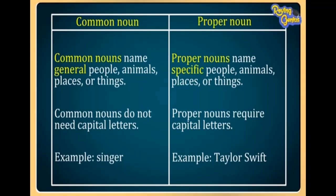Look at the following table of common and proper nouns. Common nouns name general people, animals, places or things. Proper nouns name specific people, animals, places or things. Common nouns do not need capital letters, but proper nouns require capital letters. For example, the common noun is 'singer' and the proper noun is 'Taylor Swift'.